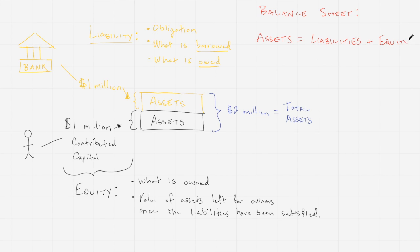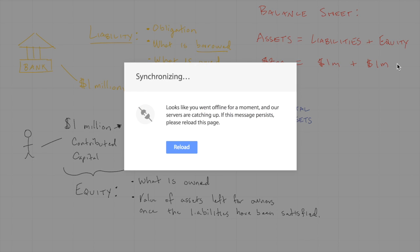So in our case here, our two million dollars in assets are comprised of one million in obligations, something that's being borrowed from an outside party, and then one million that was originated by the owners themselves.